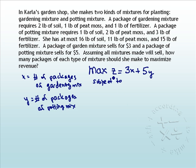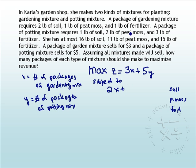Now we'll establish our constraints. Notice we have a limit on how much soil, peat moss, and fertilizer we have. Off to the side — this is optional but strongly suggested — I'm going to write down soil, peat moss, and fertilizer. You want to put all the soil numbers together, all the peat moss numbers together, and all the fertilizer numbers together to ensure you don't put numbers in the wrong places. For soil: a gardening mixture requires two pounds of soil, so that's 2X. A package of potting mixture requires one pound of soil, so plus 1Y. She has at most 16 pounds of soil, so that's less than or equal to 16. That's our soil constraint.